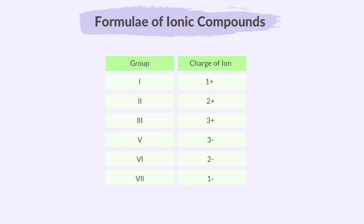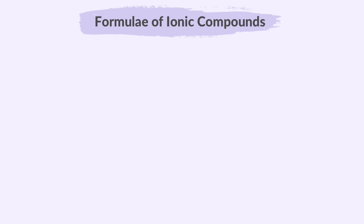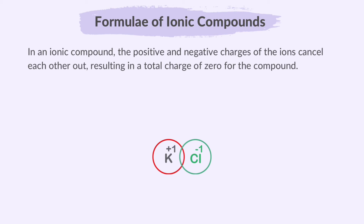Here's a table that displays the charges of ions determined by their respective groups on the periodic table. Here are some common ions you will come across and their associated charges. For example, the ion of copper(II) is Cu2+. The Roman numeral 2 in the bracket stands for the charge. Let's now deduce the formula of an ionic compound. In an ionic compound, the positive and negative charges of the ions cancel each other out, resulting in a total charge of 0 for the compound. This balance of charges is essential for ionic compounds.